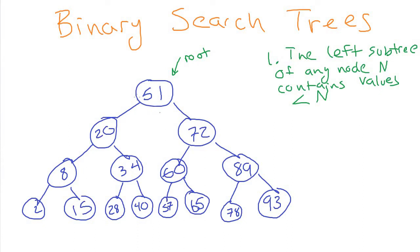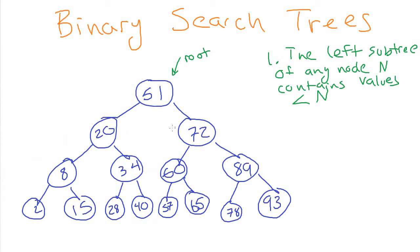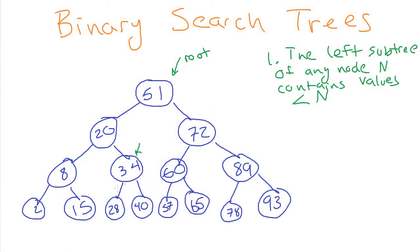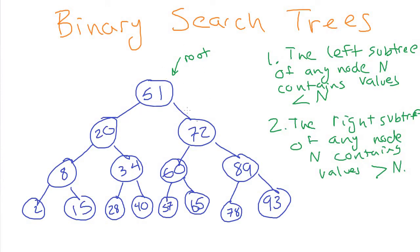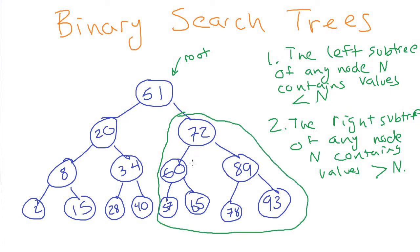If we look at any node — starting with the root node of 51 — it means all nodes in the entire left subtree have values less than 51, which is the case. That also has to be true for every other node in the tree. So if we look at the 72 node, everything in the left subtree of 72 is also less than 72. If we look at the 34 node, everything in the left subtree of 34 has to be less than 34.